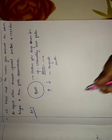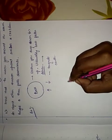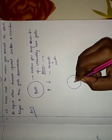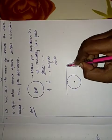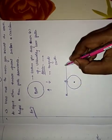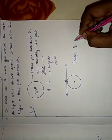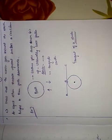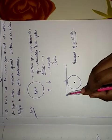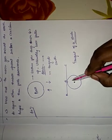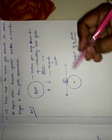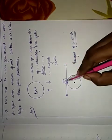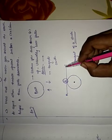Next, we have the concept of a tangent to a circle. A tangent to a circle is a straight line that meets the circle at exactly one point. Here I have drawn a circle with a line A-B-C, where B is the point where the line meets the circle. So line ABC is the tangent to the circle, and B is the point of tangency.